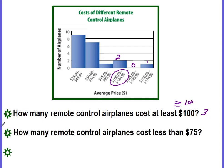How many remote control airplanes cost less than $75? Well, here is where the $75 start, but we need it to be less than $75, which means it would be these first two intervals. So we have nine at the first interval and we have seven. Nine plus seven is 16 airplanes.